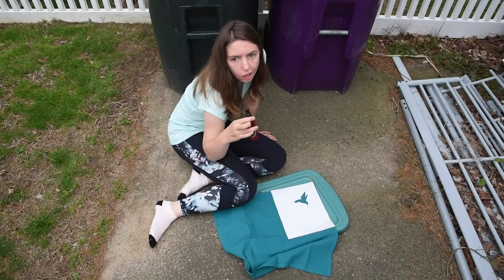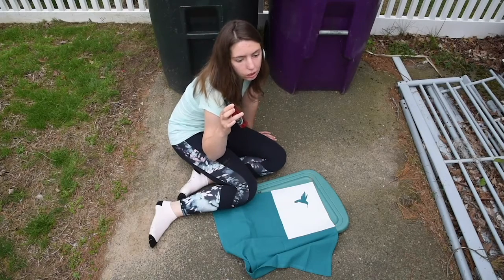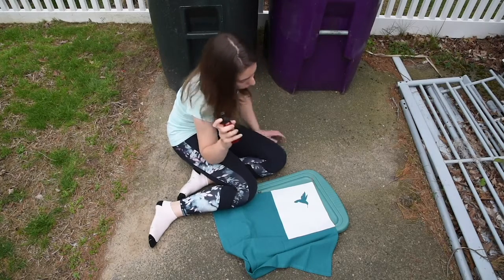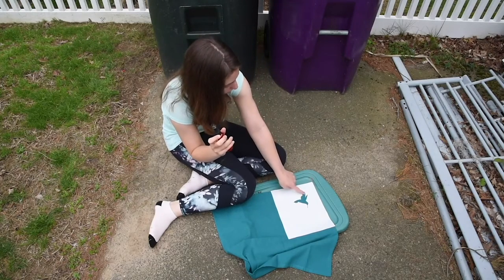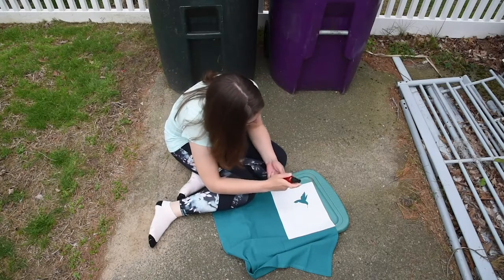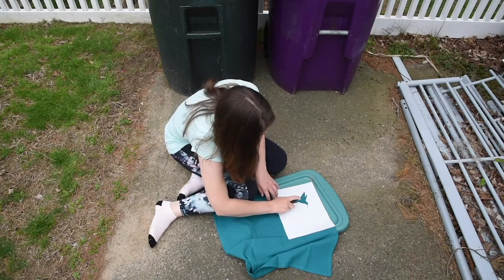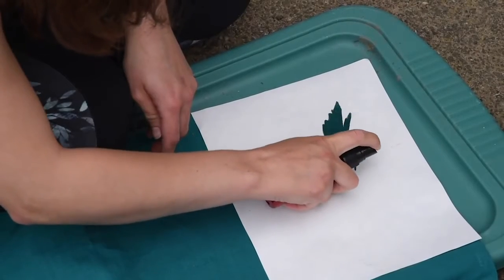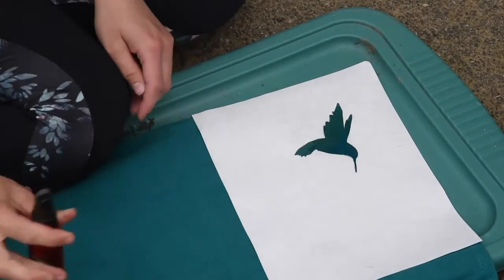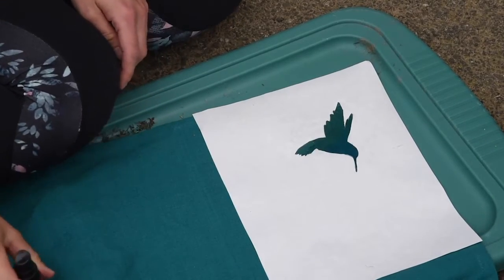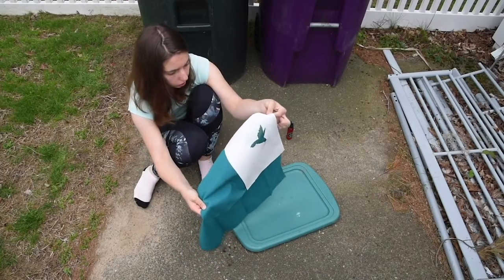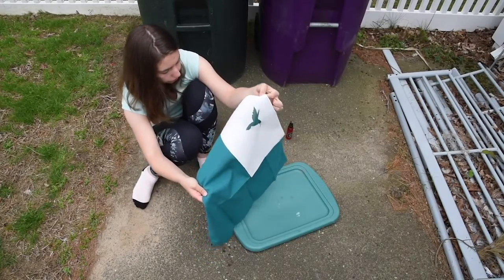Here I have a bottle of 50-50 solution of bleach and water and now I'm going to spray the inside of this hummingbird. Now I am going to put it in water to rinse off the bleach.